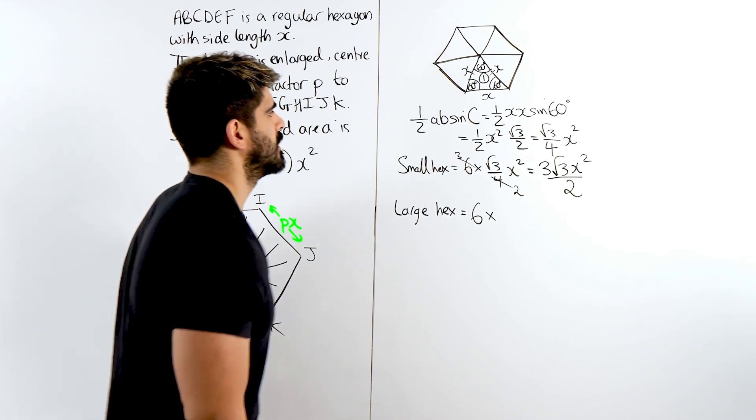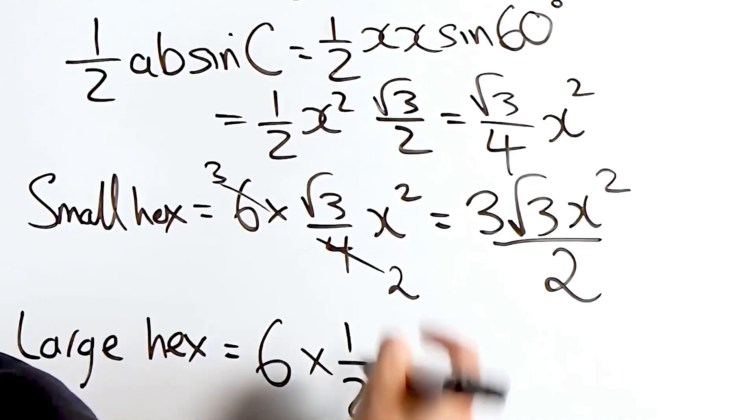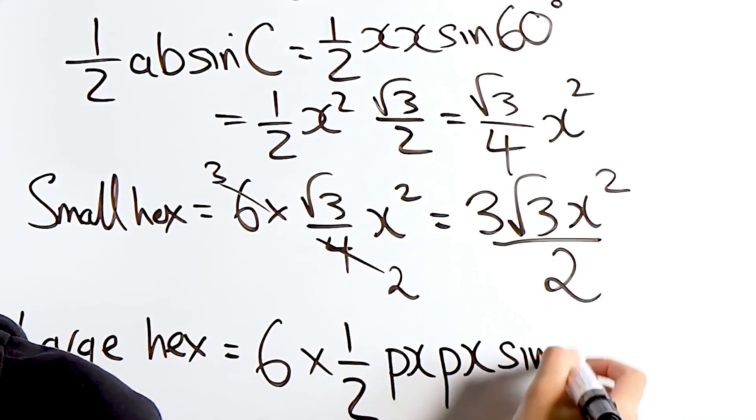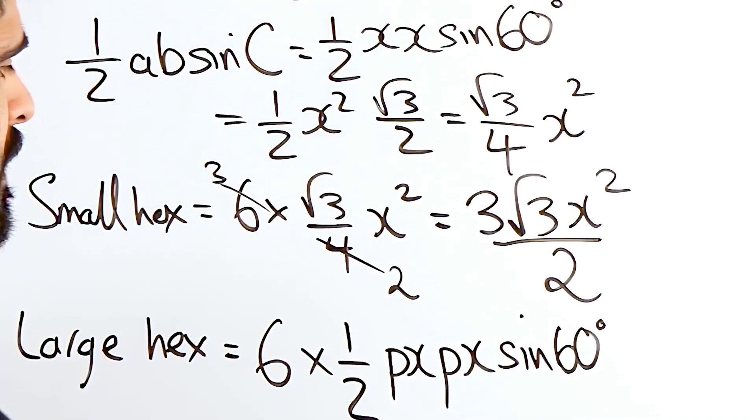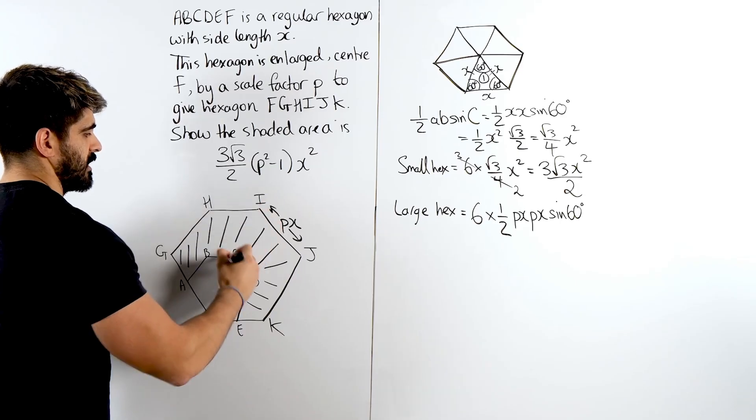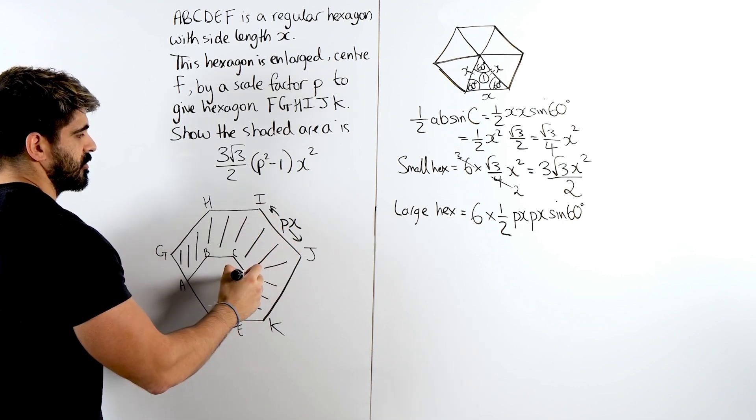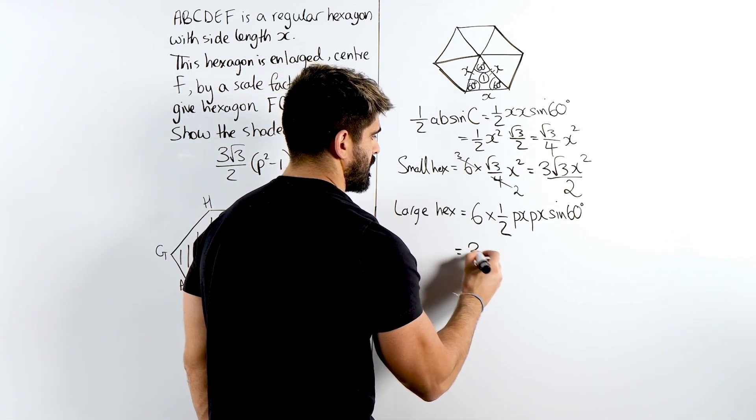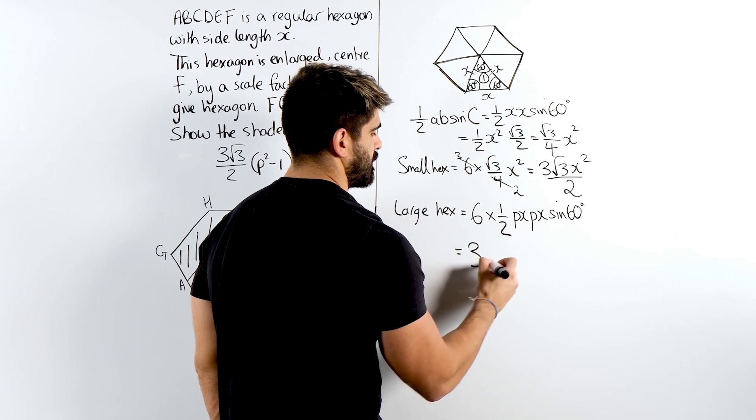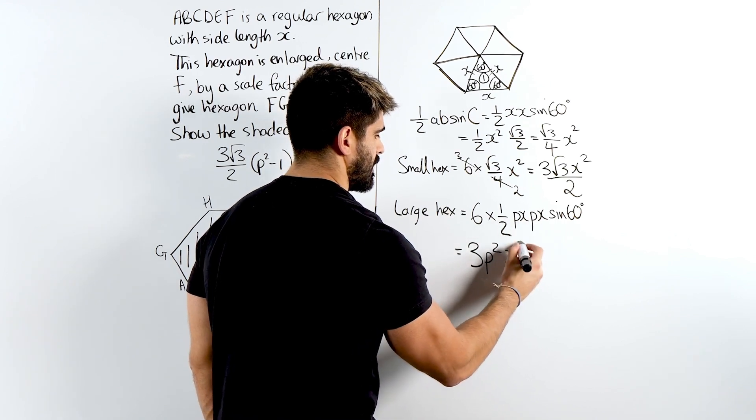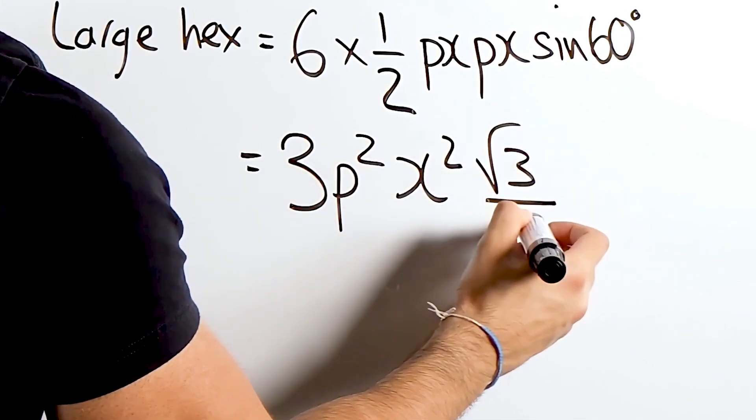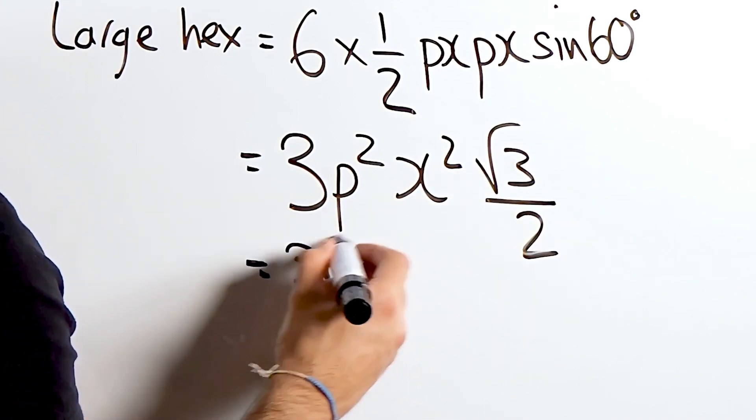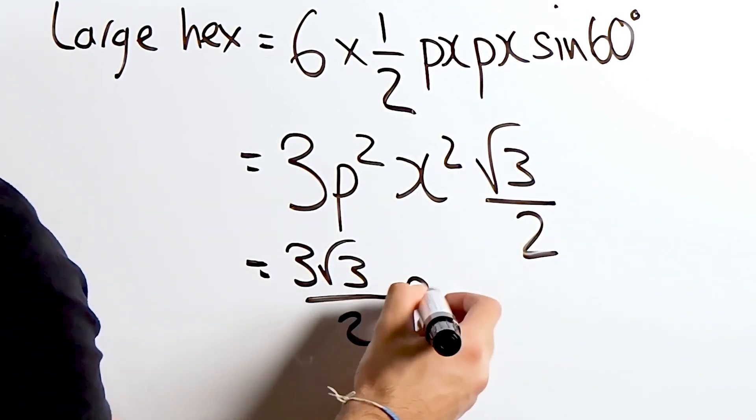So it's a half, it's not X times X anymore. It's PX times PX, sine of 60. That bit doesn't change, because if I was to draw this equilateral triangle, you'd still have that 60 degrees. It's just an enlarged version. A half of 6 is 3, so we have 3. Then P times P is P squared, X times X is X squared, and then sine 60 is root 3 over 2 like before. So this simplifies to 3 root 3 over 2, P squared X squared.